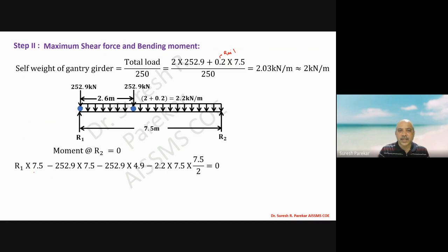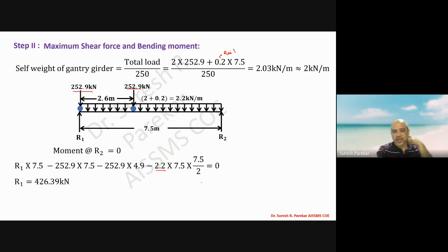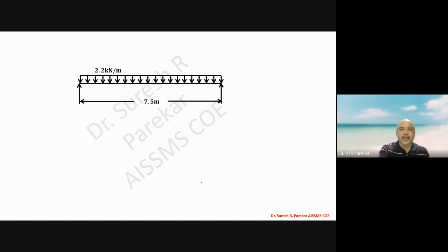Taking moment about R2 equals zero: R1 into 7.5 minus 252.9 into 7.5, minus 252.9 into 4.9, then due to self weight of girder WL squared by 2. From this we get R1 equal to 426.39 kilonewton, which is the maximum shear force.